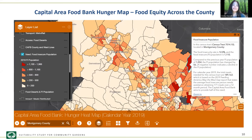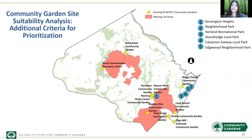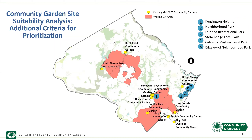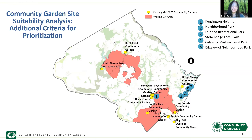We came up with a preliminary list of five top recommended sites for community gardens: Kensington Heights Neighborhood Park, Fairland Recreational Park, Stonehenge Local Park, Calventor Galway Local Park, and Edgewood Neighborhood Park. We also selected three additional sites — Wheaton Regional Park, Long Branch Local Park, and Ridge Row Rec Park — though those last three were selected not through the suitability study but through sector plans or other park studies. I'm finished with the site suitability study portion and will pass it back to Michelle, who will talk about the community garden program.